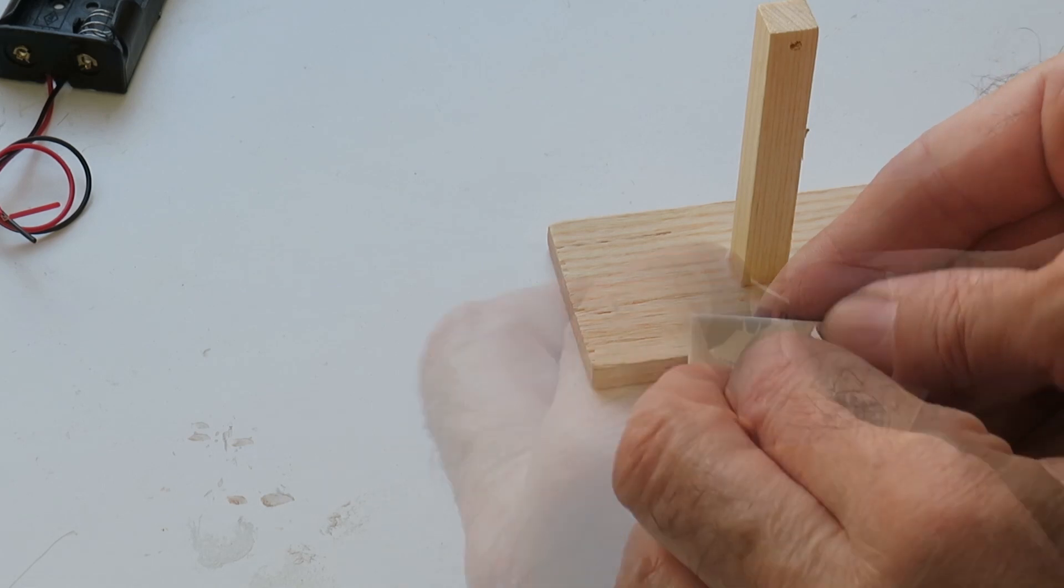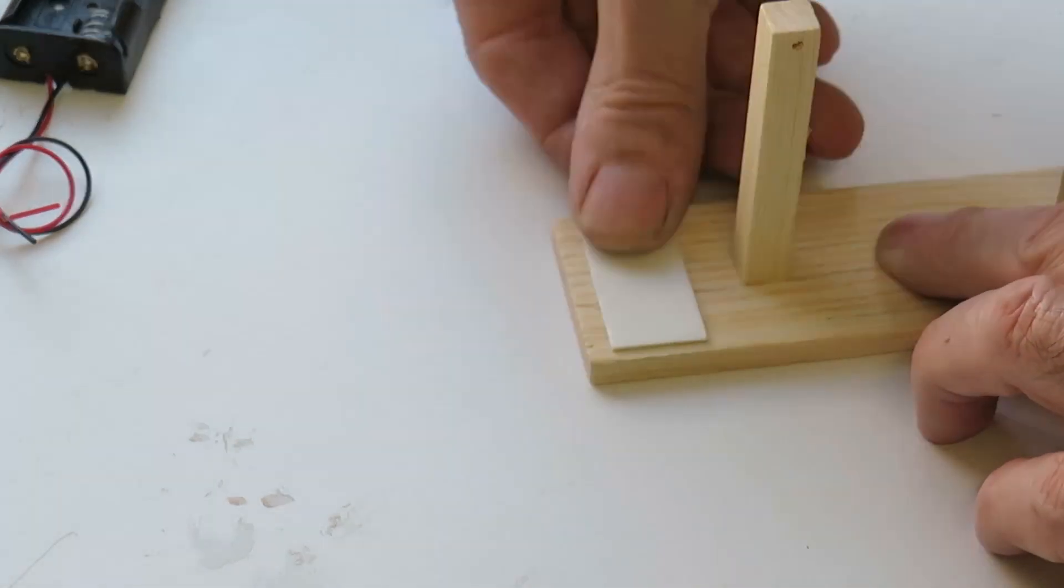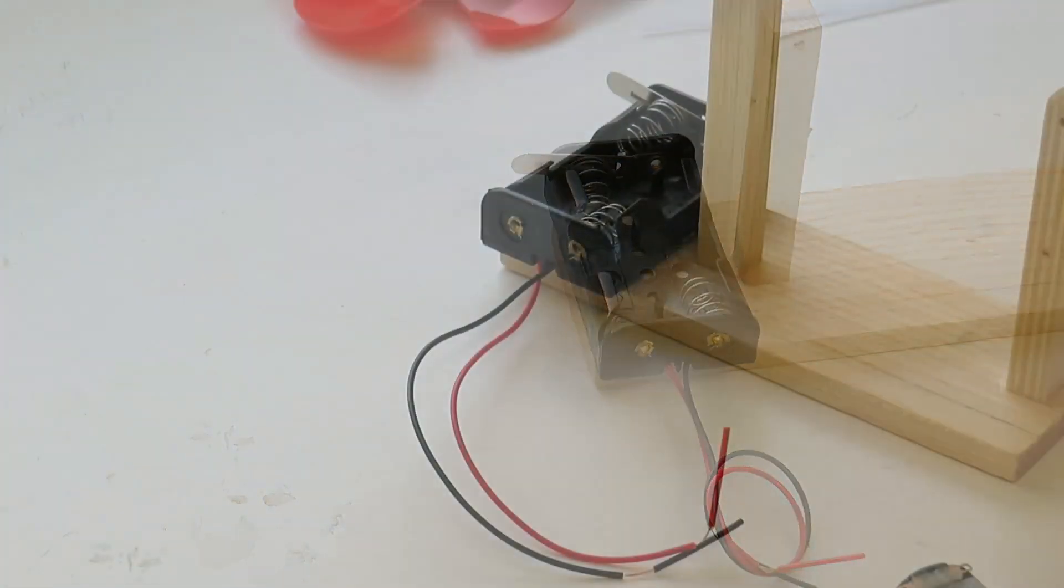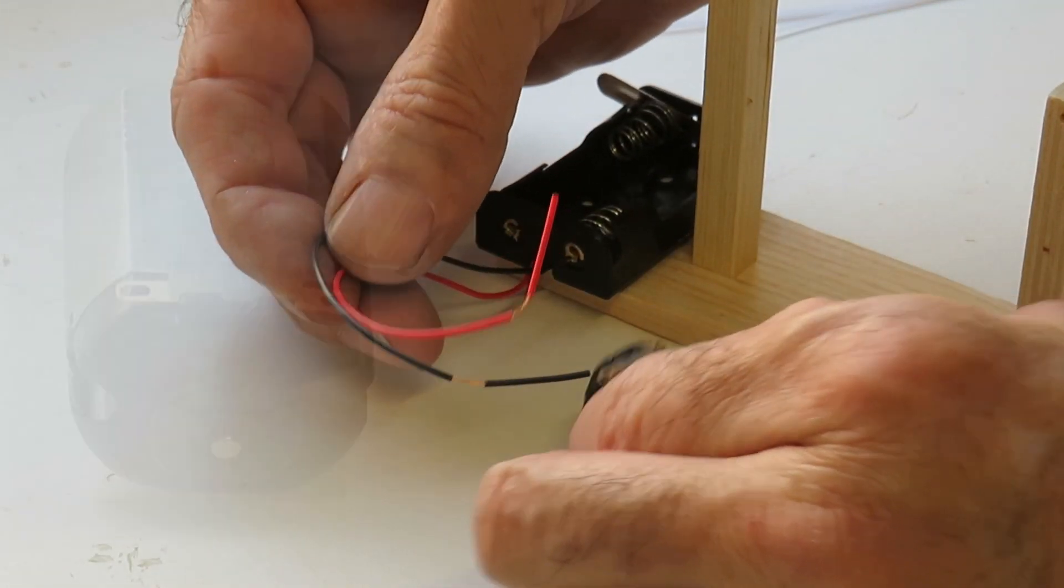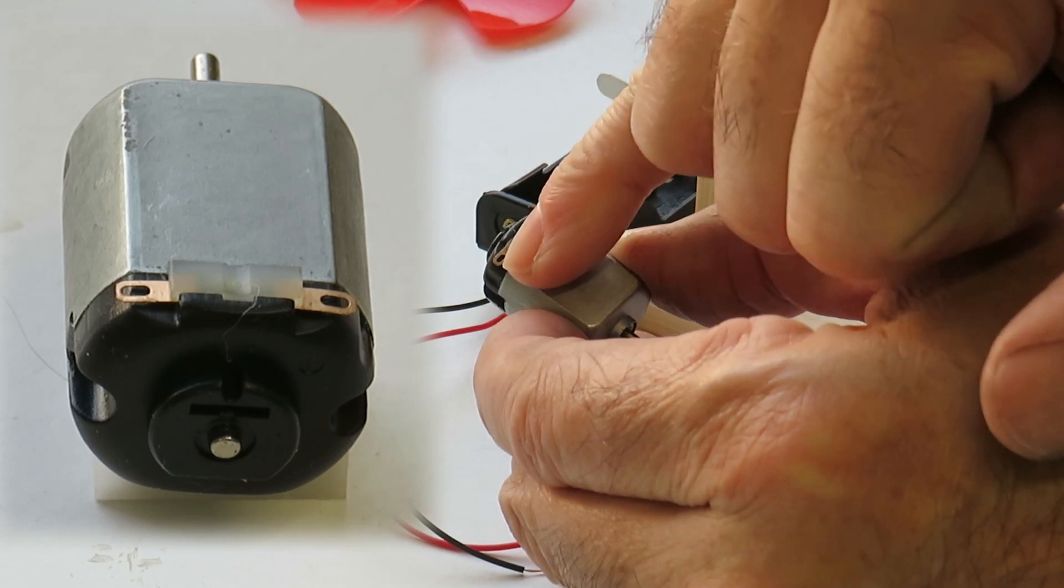So the first thing I'll do is I'll attach our battery holder with this double sided sticky tape. The next thing to do is just take the cables off the battery holder and connect them to the terminals on the DC motor.